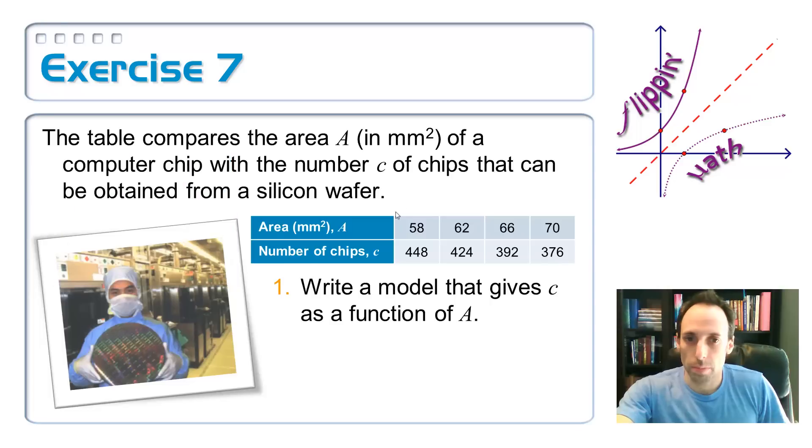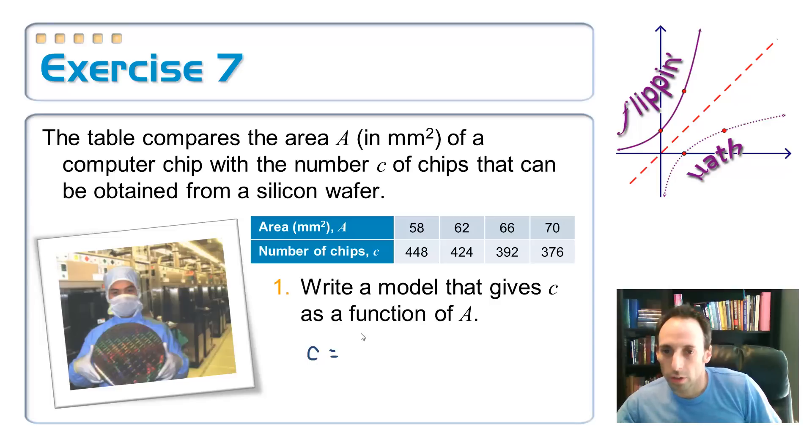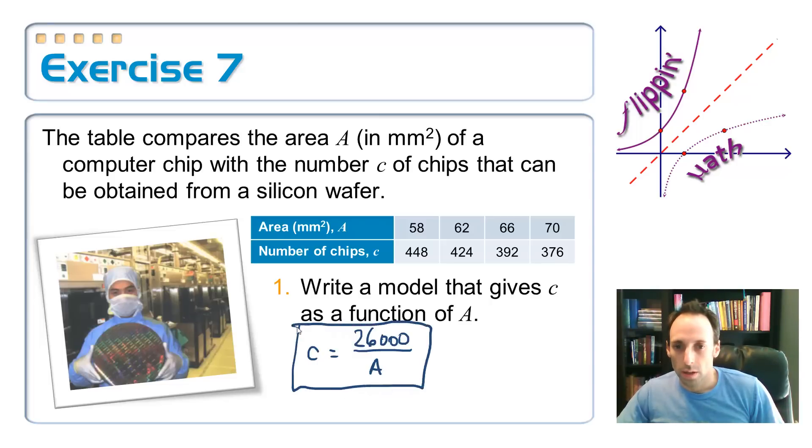So, that's what I'm going to write in my little equation here. C, C is like my y value, is equal to 26,000 divided by a. This should approximate the number of chips that I can cut from that wafer for a given area of each one of those chips.